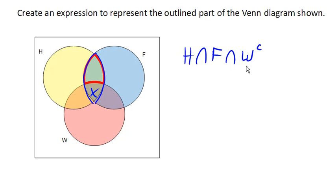In other words, we're intersecting it with not in W. So this says take everything that's in H, and it's also in F, and it's also not in set W.